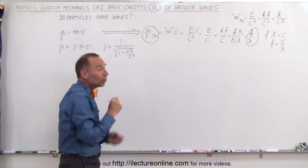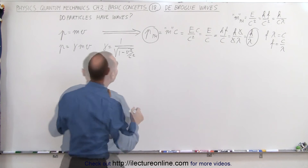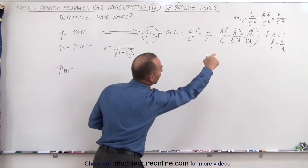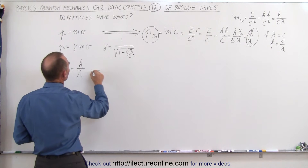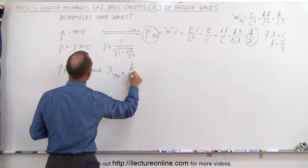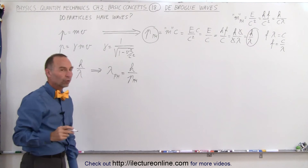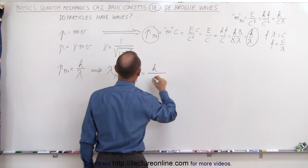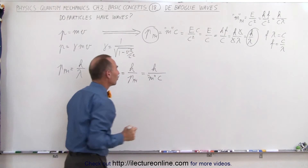By all apparent measures, the momentum of a photon is equal to h over lambda, which means that we can say that the wavelength of a photon is equal to h divided by the momentum of a photon. And of course, the momentum of a photon can be written as h divided by the apparent mass times its velocity, which would be the speed of light.